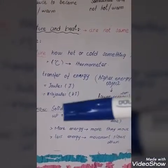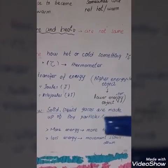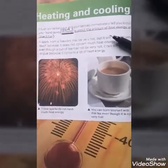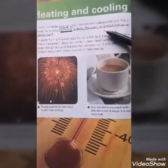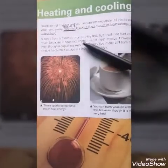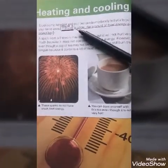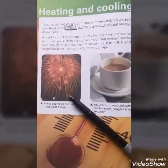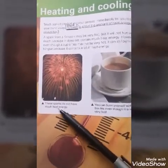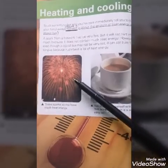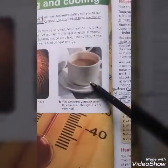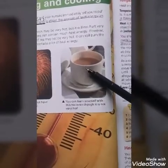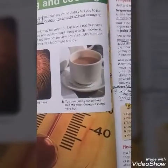If less energy is present in the particles, the movement slows down. The first blank of this unit is about the movement of heat energy — the answer is 'hotness'. In this paragraph you can see a picture: sparks do not have much heat energy so they don't harm you, but a hot cup of tea has more heat energy so it can burn you.